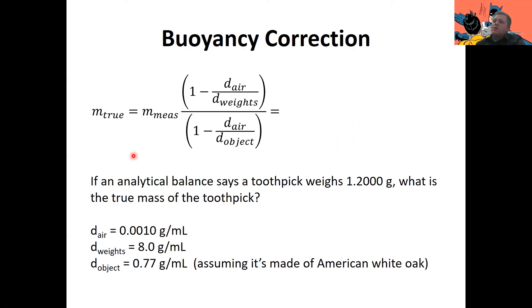And so let's give this a try real fast. I'm going to give you this question. If an analytical balance says a toothpick weighs 1.2000 grams, what is the true mass of the toothpick? And I've provided the density of the air, the density of the weights, and the density of your objects down here. And I will say with the density of the object, I assumed that the toothpick was made of American white oak. Different trees, the wood of different trees has different densities. And I have no idea what wood toothpicks are made of. So I just assumed it was American white oak because that sounded the coolest. But go ahead and pause the video now and see if you can't calculate the true mass of the toothpick. All right. I hope you didn't lie about that. I hope you actually paused it. So I'll be disappointed in you. So will your mom if you didn't actually pause it. Unless your mom doesn't care, which is possible.